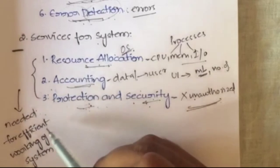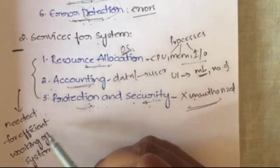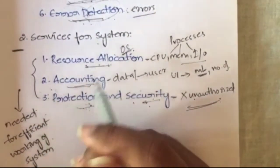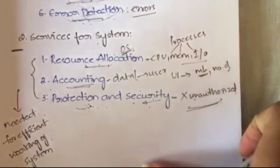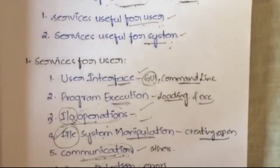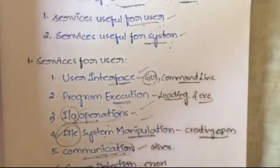So those three services — resource allocation, accounting, and protection and security — are the services useful for the system. These are provided by the operating system to make your system function very efficiently. This completes the topic of services of the operating system.